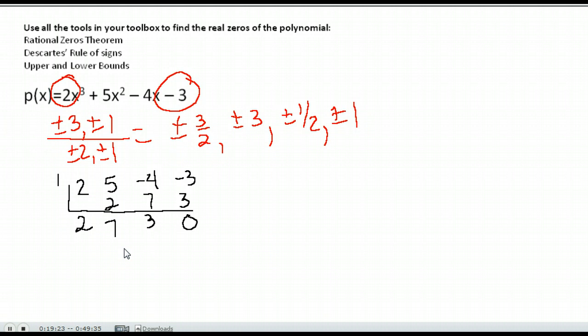Oh, and lucky me. One worked, my very first one. Awesome. So over here where I'm writing my answers, I know 1 is a zero because it came out with a remainder of 0 here.